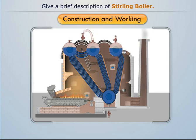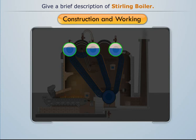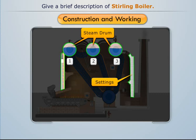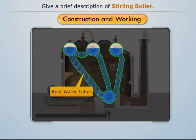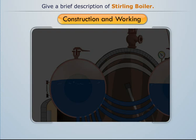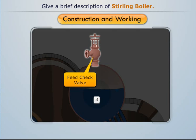It consists of three straight horizontal steam drums arranged in the upper part of the boiler settings and a mud drum arranged in its lower part. The steam drums are readily connected with the mud drum by a series of bent water tubes. Steam drum 1 is attached with a safety valve, drum 2 with a pressure gauge, drum 3 with a feed check valve, and the mud drum with a blow-off valve.